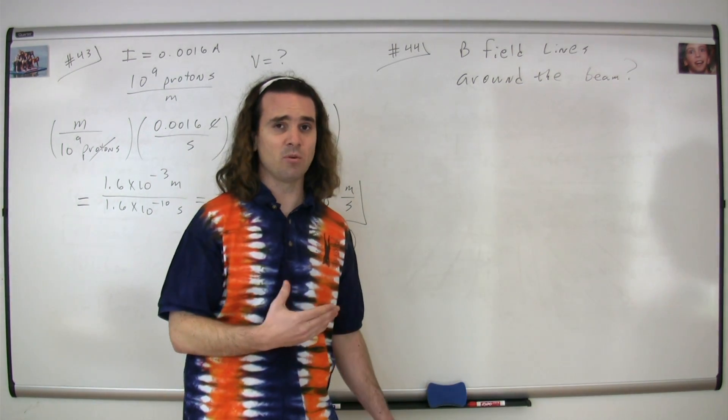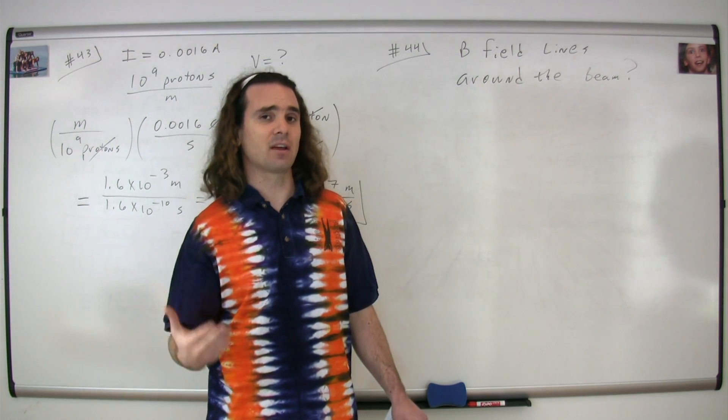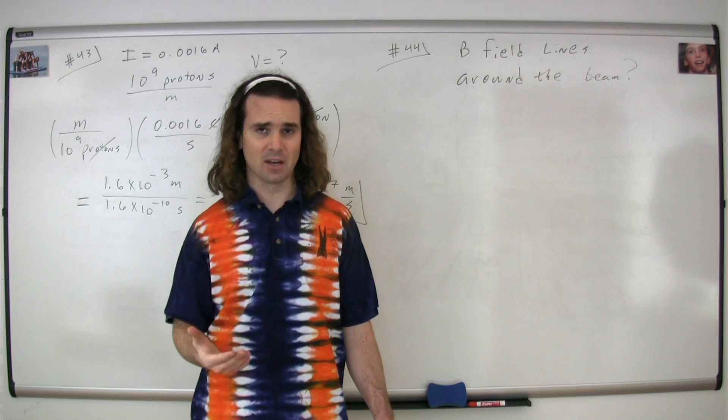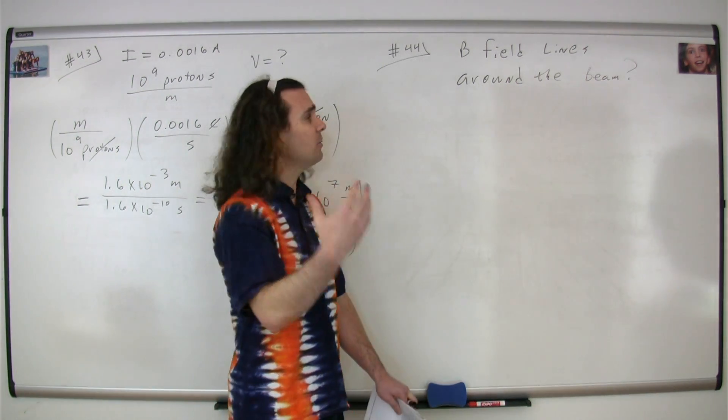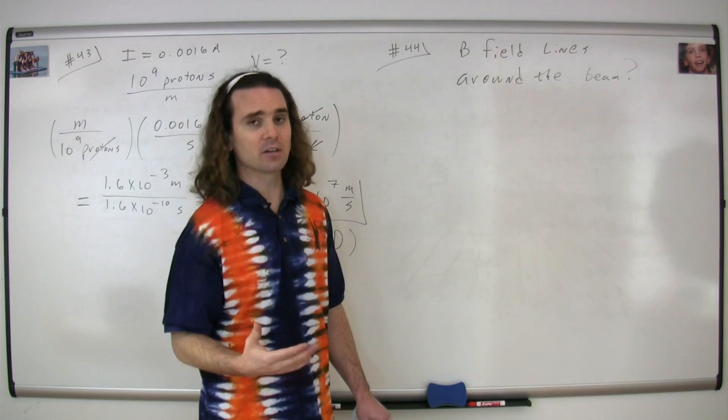Now, this beam of protons moving in a single direction acts the same way as a current carrying wire. A current carrying wire is a bunch of charges moving in the same direction just like the beam of protons. So this question could be equally stated as what is the shape of the magnetic field lines around a current carrying wire.